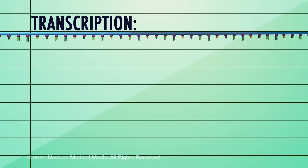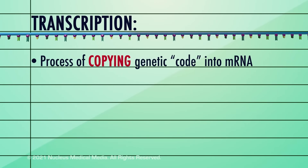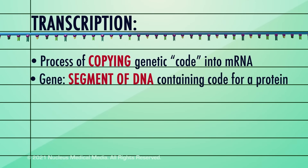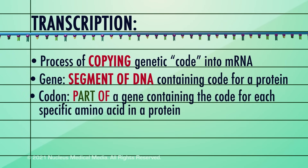To summarize, transcription is the process of transcribing or copying the genetic code for building a protein into messenger RNA. A gene is a segment of DNA containing the instructions or code for building a protein. A codon is a group of three consecutive nitrogenous bases in a gene containing the code for a specific amino acid in a protein.